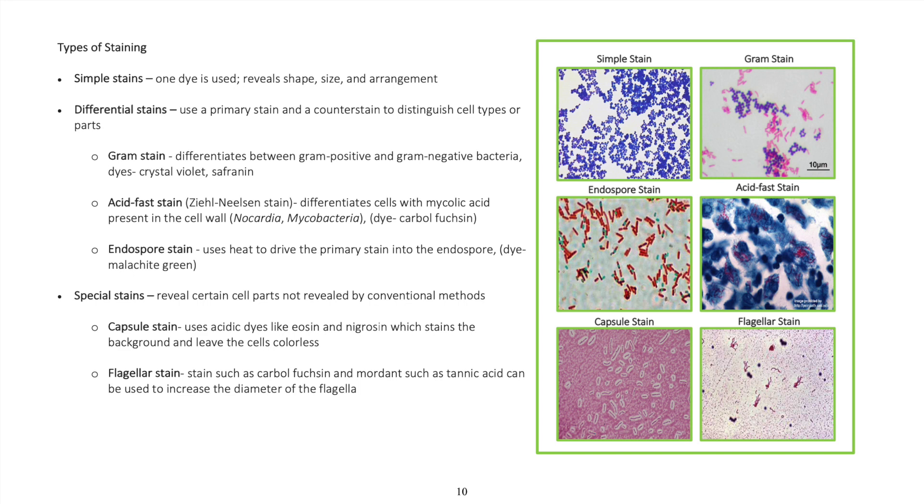Endospore stain uses heat to drive the primary stain into the endospore. Dye: malachite green.